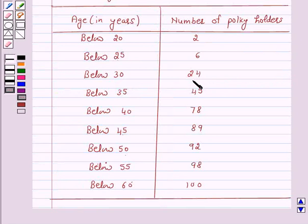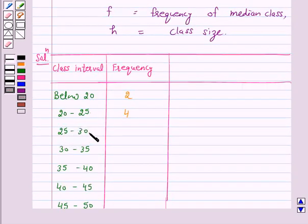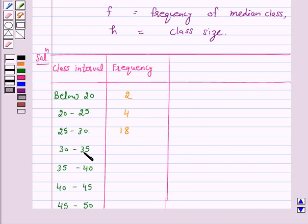Similarly, there are 24 policy holders with age below 30 years and 6 policy holders whose age is below 25 years. Therefore the number of policy holders in the group 25 to 30 is 24 minus 6, which is 18. So the frequency of this class is 18. The frequency of the class 30 to 35 is 45 minus 24, which is 21.